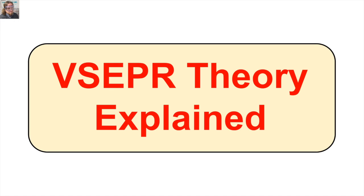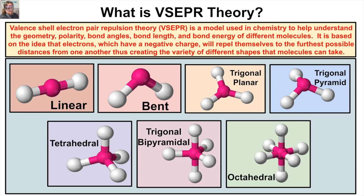So what is the valence shell electron pair repulsion theory? VSEPR is a model used in chemistry to help understand the geometry, polarity, bond angles, bond length, and bond energy of different molecules. It is based on the idea that electrons, which have a negative charge, will repel themselves to the furthest possible distances from one another, thus creating the variety of different shapes that molecules can take.